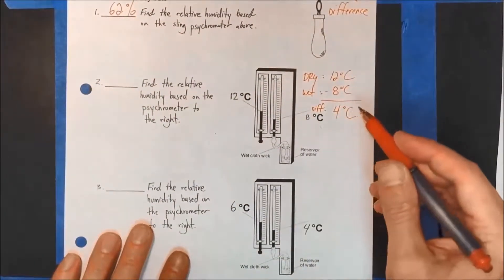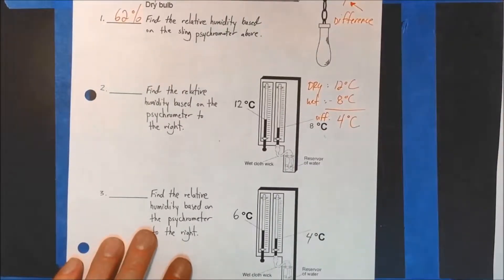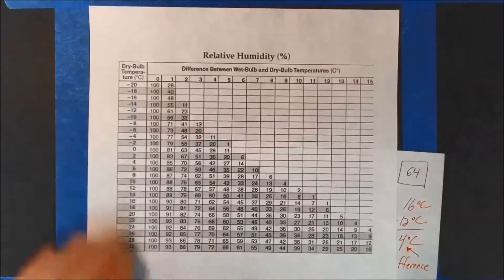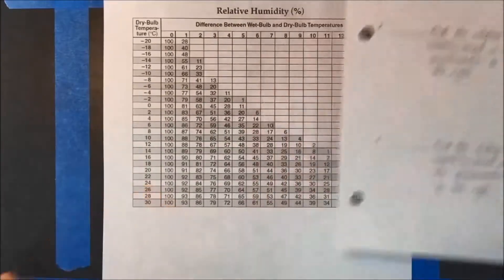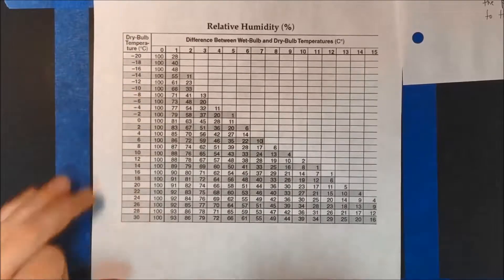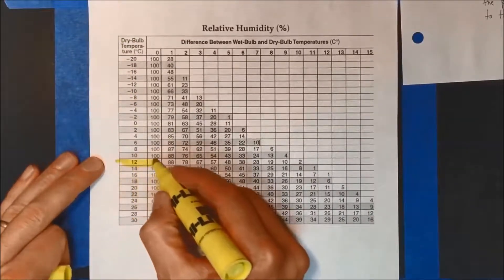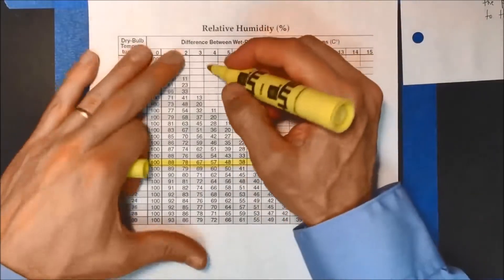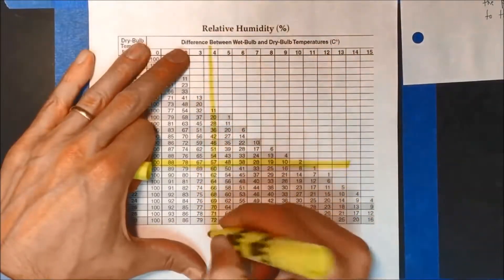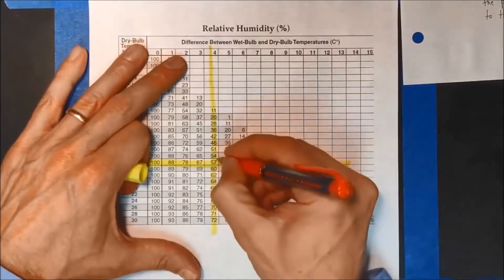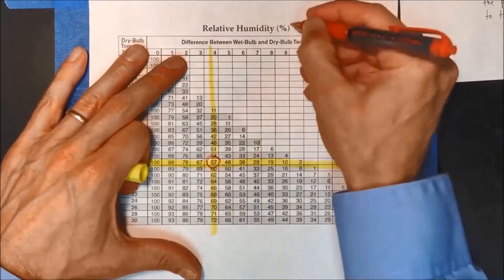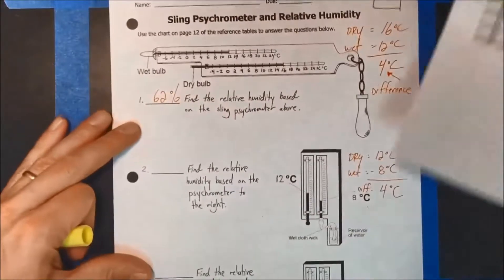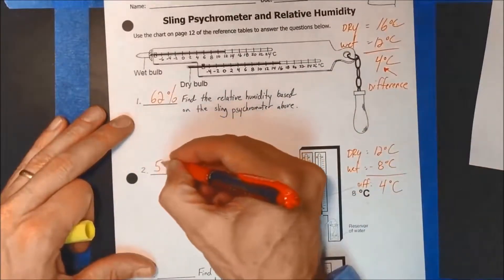But here we're back to this. Dry bulb 12, the difference is 4 degrees C. Let's go here. Dry bulb is, again, dry bulb temperatures are here. It's 12. So just so you can visually see it, I'm going to do that. And then the difference here is 4. We're in that 4 column again. And where they meet is 57. Again, 57%. That is key. 57%.